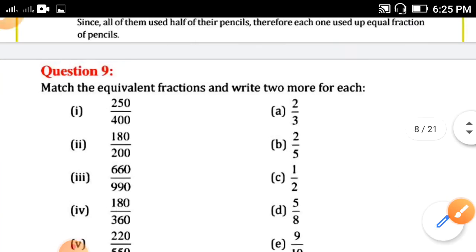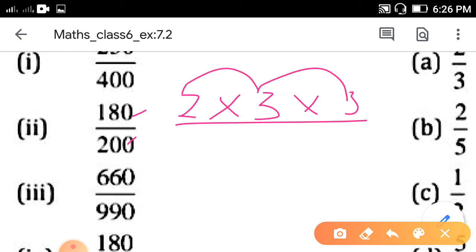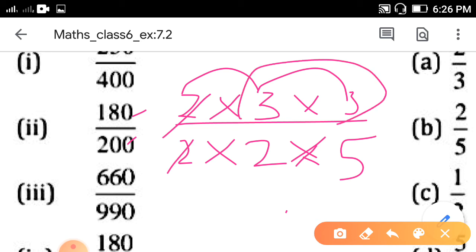Now, second one, 180 upon 200. Zero, zero, cut. 6 times 3 is 18. Then, you can write 2 times 3 is 6, and 6 times 3 is 18. So, you can write 2 into 3 into 3, because 2 times 3 is 6, and 6 times 3 is 18. And 20, 2 times 2 is 4, 4 times 5 is 20. In the lowest form, lowest number you can use. Now, here 2, 2, 2, cut. Further, it is not possible. So, you can write 3 times 3 is 9, and 2 times 5 is 10.